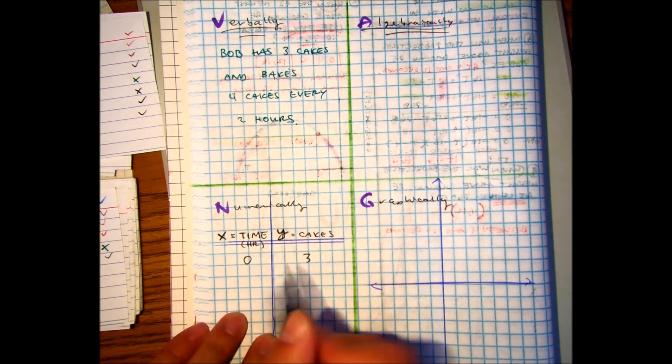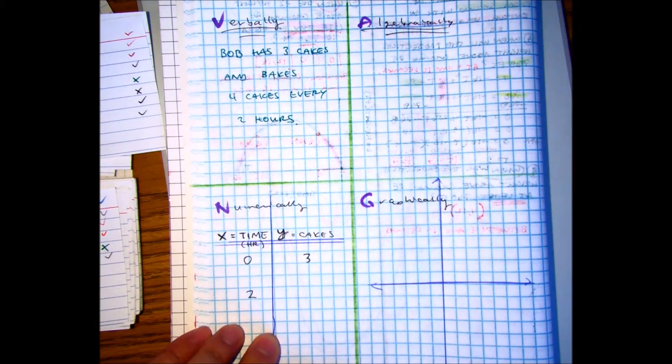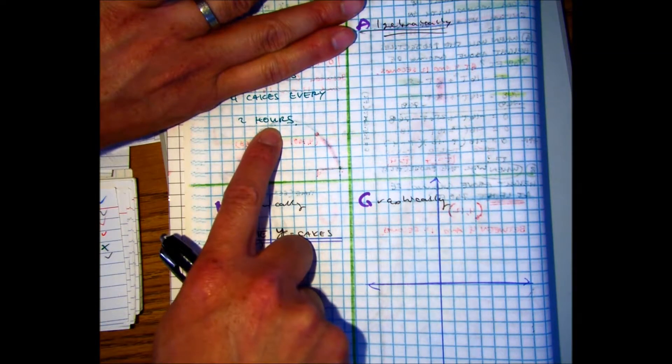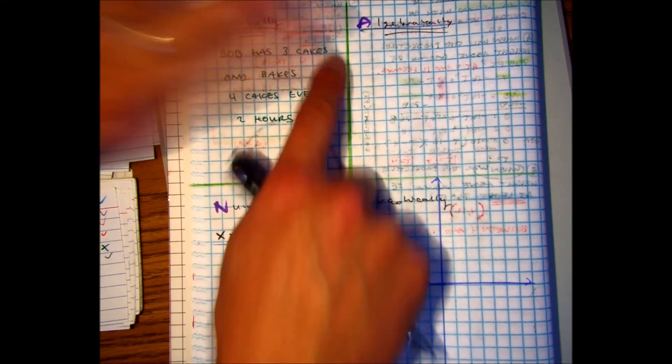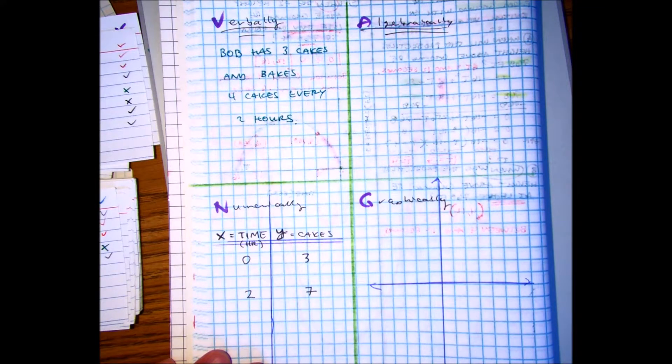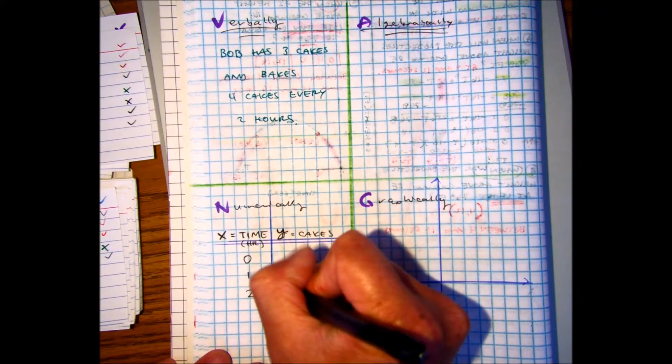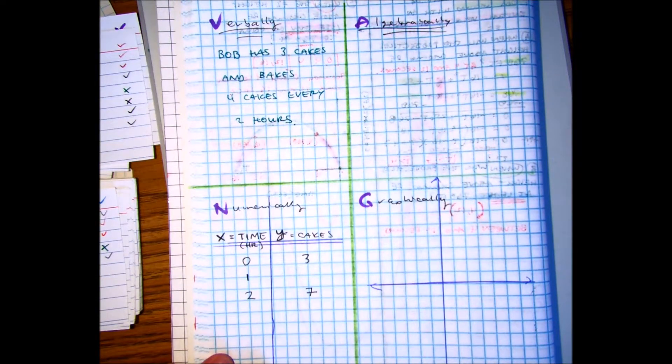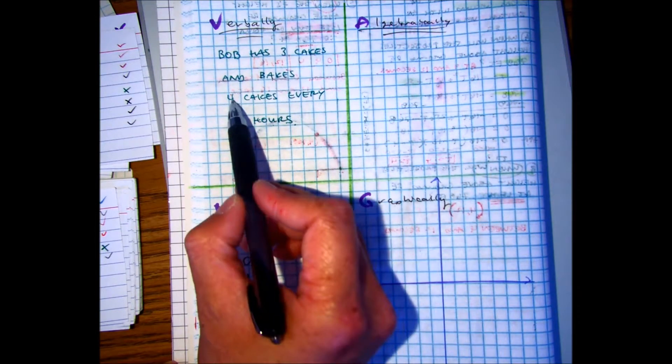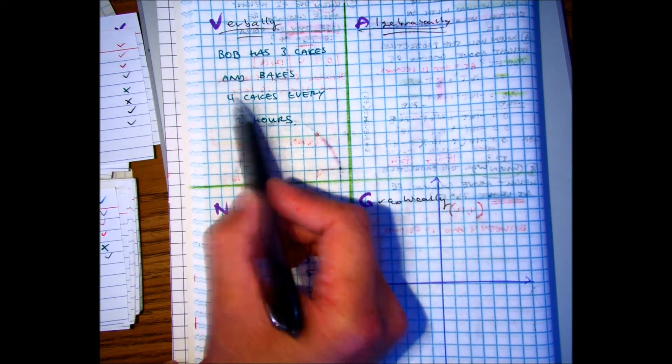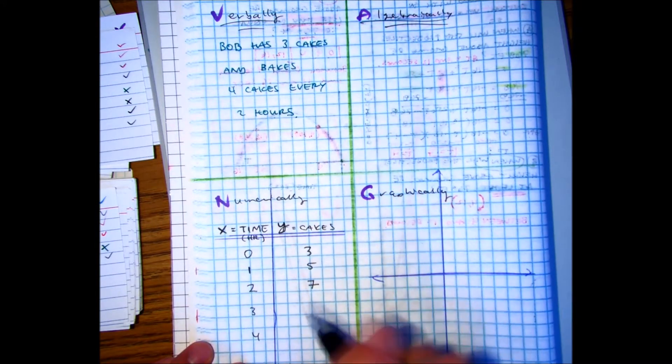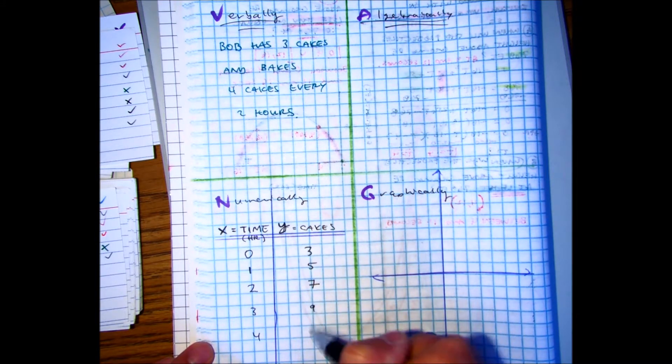Okay, let's just say we jump to two hours. He started with three. He has two hours. So in two hours, he can bake four. So four plus three is seven. Question. After one hour, how many cakes does Bob have? Five. Because it's the three, right? And then you can cut the ratio in half. Well, instead of four cakes for every two hours, you can do two cakes every one hour. So this number would be what? And this would be what?